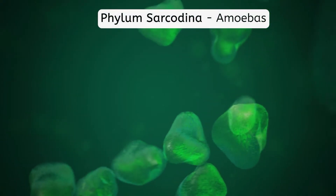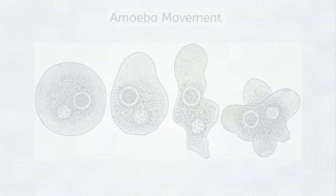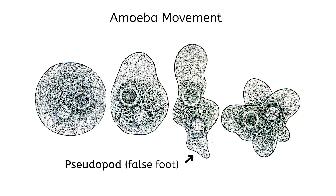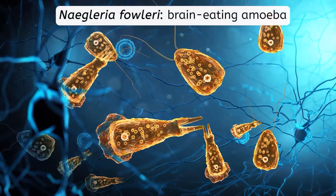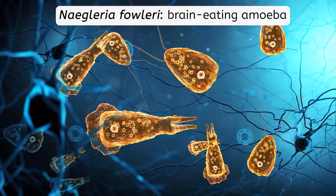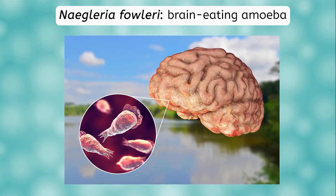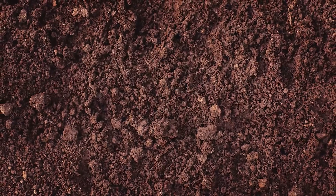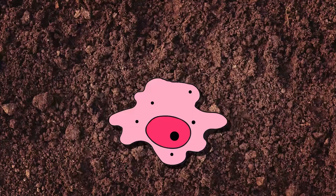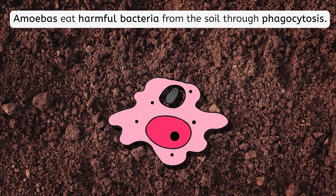The Sarcodina phylum includes amoebas, which move by extending a pseudopod, or false foot. The cytoplasm is pushed into the pseudopod and the rest of the cell simply follows. A particularly notorious Sarcodina is Naegleria fowleri, more commonly known as the brain-eating amoeba. It enters through the nose and usually occurs when swimming in contaminated lakes and rivers, and proceeds to destroy brain tissue — it is almost always fatal. But not all amoebas are bad; some are known to eat harmful bacteria in the soil through phagocytosis, a process in which the amoeba changes its shape to surround and engulf the bacterial cell, then digest it to absorb its nutrients.